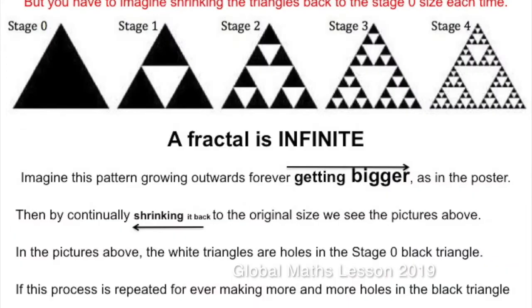Observe the black triangle. What happens to the black triangle as you progress from stage 0 to stage 1 to stage 2 to stage 3 and so on? They can grow outwards, forever getting bigger, as in the Global Maths Lesson poster, or inwards at smaller and smaller scales. Take a moment to imagine the process going forever outwards and forever inwards.